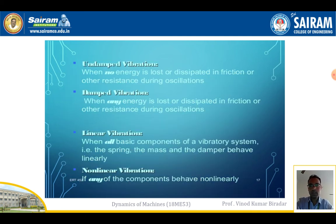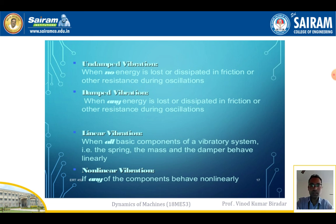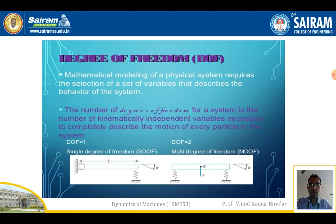Additional types of vibration include: undamped vibration, where no energy is lost or dissipated in friction or resistance during oscillation; damped vibration, where energy is lost in friction or resistance during oscillation in an exponential manner. Linear vibration is when all basic elements of the vibrating system — spring, mass, and damper — behave linearly. Non-linear vibration occurs when any one of those components behaves non-linearly.